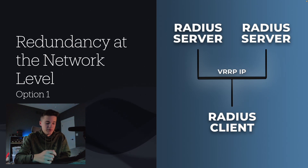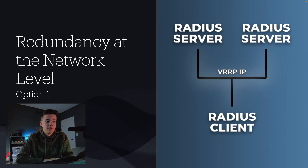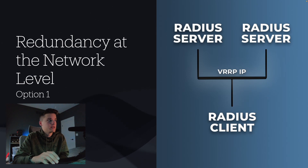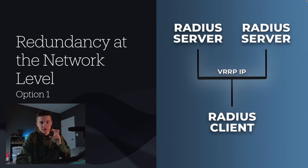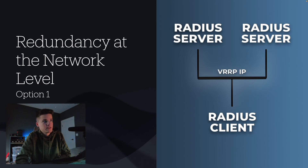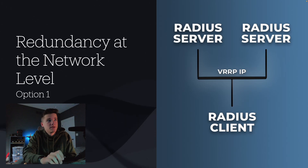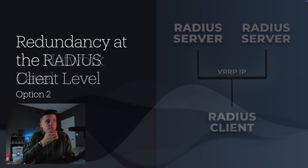If you're using something like KeepaliveD, which I've talked about in the past, you can weight them with priorities. From the RADIUS point of view, your RADIUS server is going to be using the floating IP address, and you'll fill that into your RADIUS client.